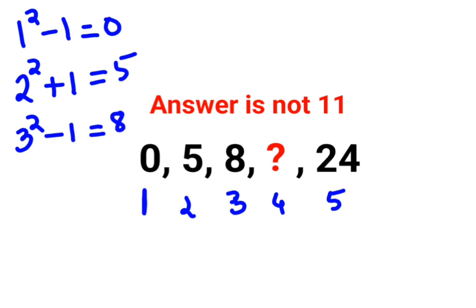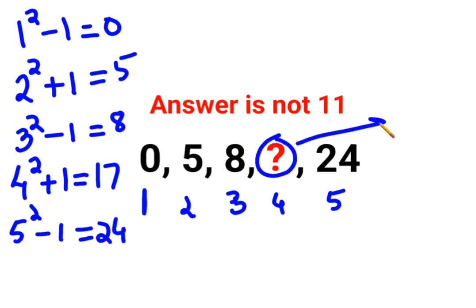So technically 4 squared plus 1 should get you 17. That should be the answer for the question mark. But just to confirm, let's see: 5 squared minus 1, does it get us 24? Yes it does get us 24. So here we can say the answer for this question mark is supposed to be 17.